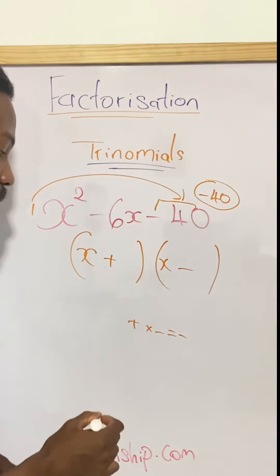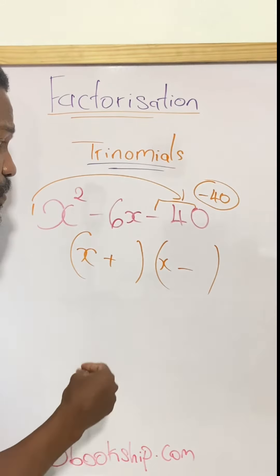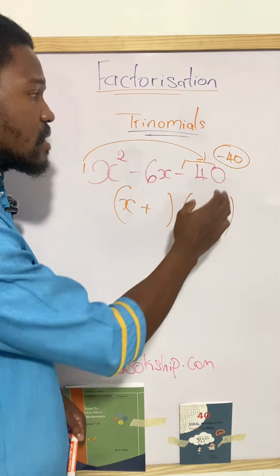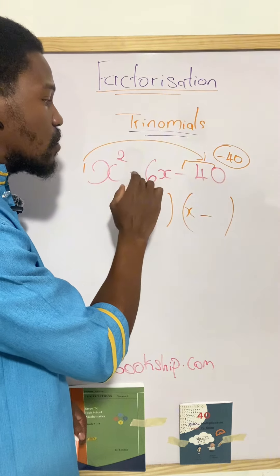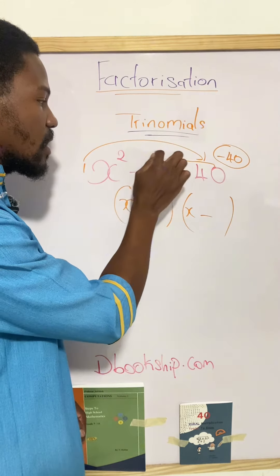So we have to find the factors of 40 in such a way that when I multiply them gives us negative 40. And those same two terms must add together to give us negative 6.